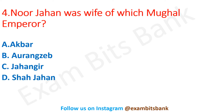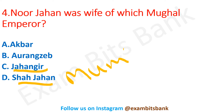Next question: Nur Jahan was the wife of which Mughal emperor? Options are Akbar, Aurangzeb, Jahangir, or Shah Jahan. The correct answer is option C — Jahangir. Nur Jahan was the wife of Jahangir, and the wife of Shah Jahan was Mumtaz Mahal.